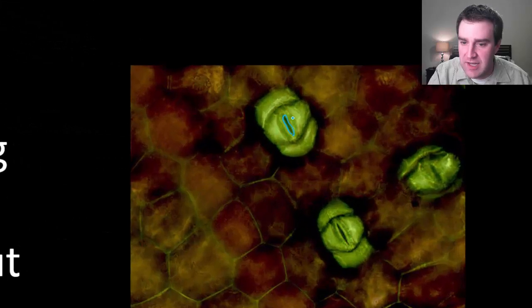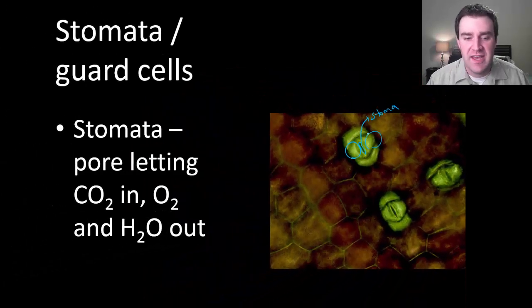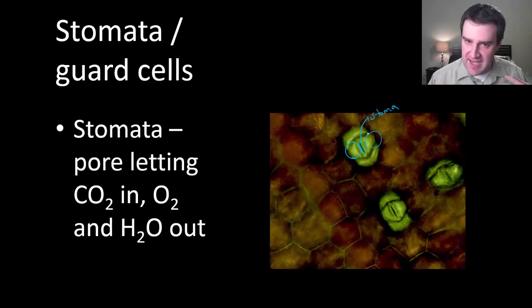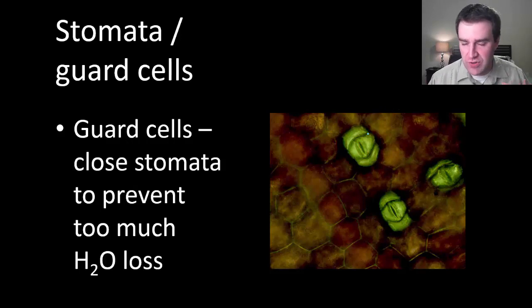This little hole here is the stomata, or the stoma is singular, and around it are the guard cells. And again, the idea is that if the stomata control the gas exchange, then the guard cells can make sure that you don't lose too much water because they can actually close.